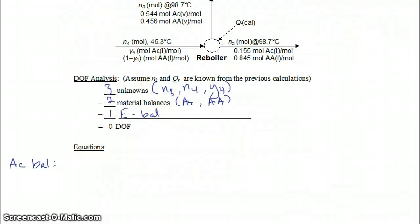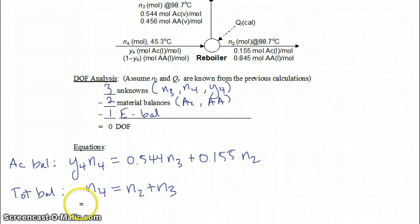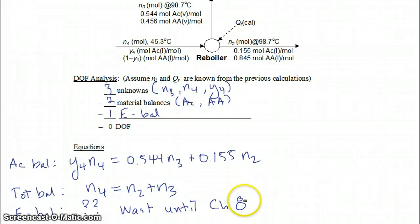We write the balances for the reboiler. The acetone balance is: y4 × n4 = 0.544·n3 + 0.155·n2. The total balance is simply n4 = n2 + n3. For the energy balance on the reboiler, we don't currently have enthalpy data as a function of temperature for these streams, so we will have to wait until Chapter 8 to figure out how to finish solving this part of the problem.